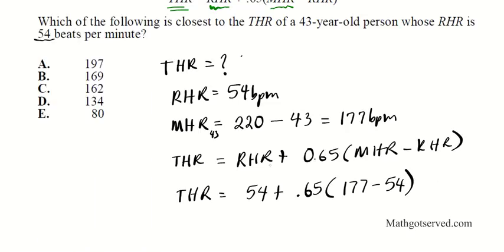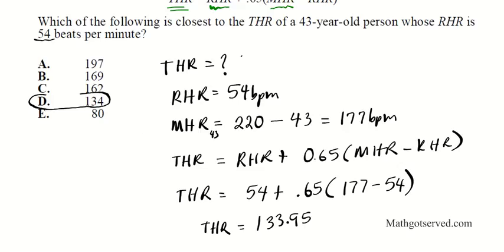So your training heart rate is 133.95. The question asks which option is closest, and clearly option D, 134, is closest to our target of 133.95. So the answer is D.